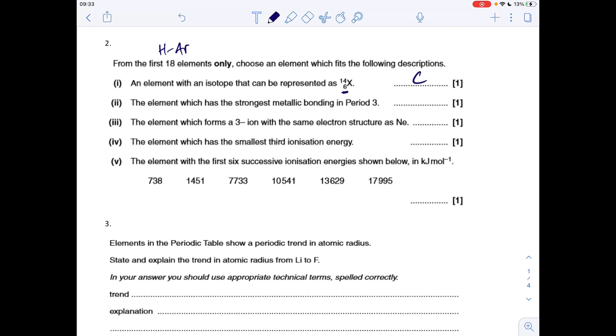Element with the strongest metallic bonding in period 3. Well the 3 metals in period 3 are sodium, magnesium, aluminium. So it's aluminium because it's got the biggest charge and the most delocalised electrons. Element that forms a 3 minus ion. So it's gaining 3 electrons to get the same electron structure as neon. Well neon's got 10 electrons, so this must have had 7, so it's nitrogen.